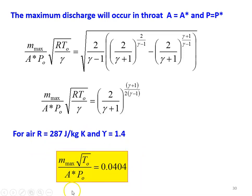We will refer to the gas tables in the next lecture, from where we collect the properties for calculating the various parameters. For isentropic flow, particularly in gas dynamics, we refer to gas tables where property values are available for different Mach numbers from 0 to 10. We take the values of the properties to solve problems for isentropic flow, and we will refer to the gas tables in the next lecture.